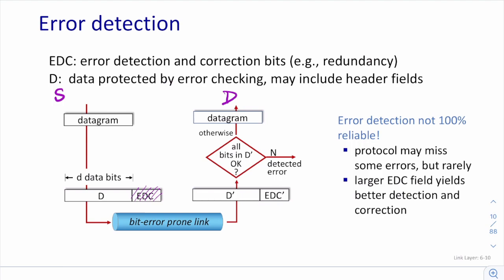Assuming the link is error-prone, after the receiver receives the signal, D becomes D' and EDC becomes EDC'. They may not be equal to the originals due to errors in the link. The receiver recomputes the EDC using the same algorithm as the sender and checks if the computed EDC matches EDC'. If they match, we have confidence that D' equals D.